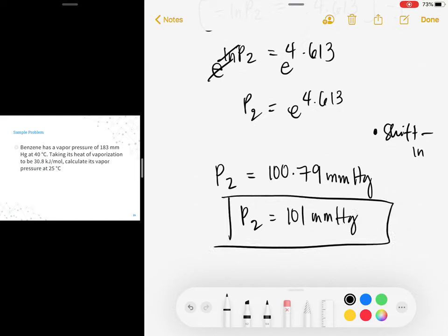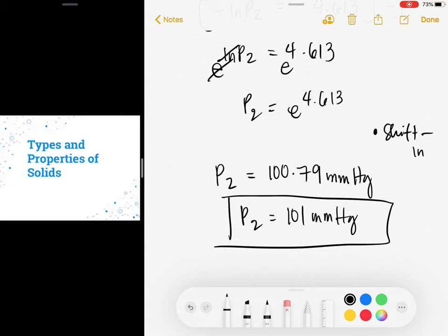Alright! Our sample calculation is very easy. I think there's also this in our PowerPoint. Now, don't worry, we'll be practicing more on the calculation side. We'll have a separate session for that. So that ends part 3 of our lecture. The next lecture would be on types and properties of solids.